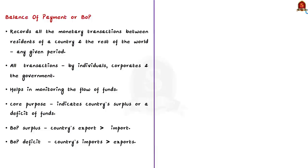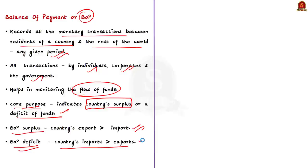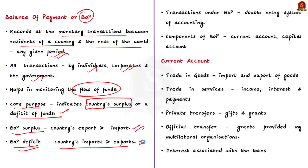Balance of Payments (BOP) is a statement which records all the monetary transactions made between residents of a country and the rest of the world during any given period. This statement includes all the transactions made by individuals, corporates, and the government. The BOP helps in monitoring the flow of funds. A BOP statement indicates whether the country has a surplus or deficit of funds — BOP is said to be surplus when the country's exports are more than its imports, and BOP deficit indicates that the country's imports are more than its exports. It is something similar to the double entry system of accounting, where all transactions will have a debit entry and a corresponding credit entry. There are two components of balance of payments: the current account and the capital account.